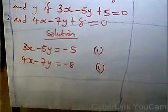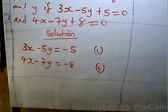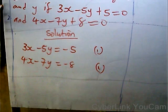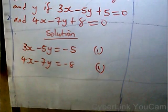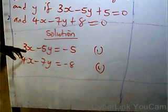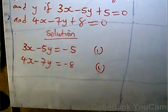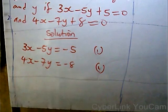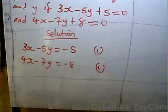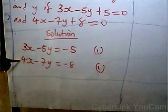Now we look at these two equations. The method we intend to use is elimination method. In elimination method, you need to eliminate one of the unknowns — you eliminate x or you eliminate y. Suppose I want to eliminate x. We make the coefficients of x in both equations the same by multiplying equation 1 by 4 and equation 2 by 3.